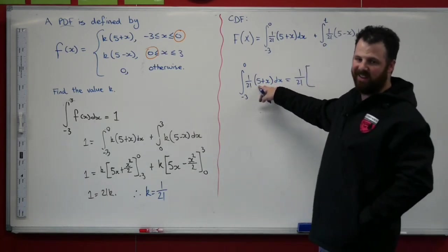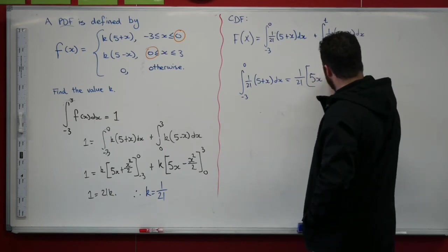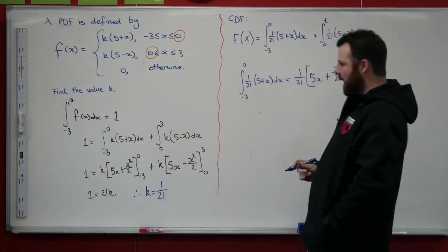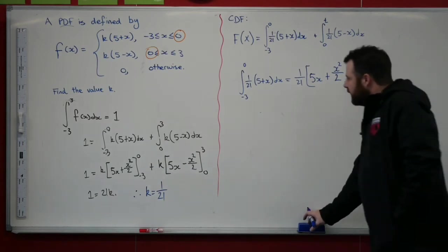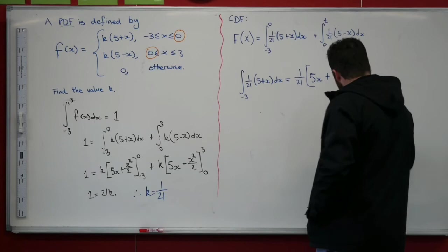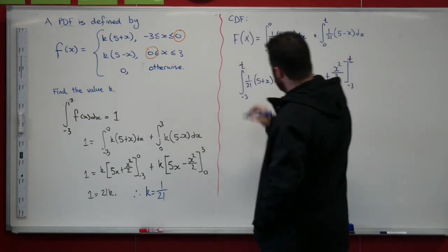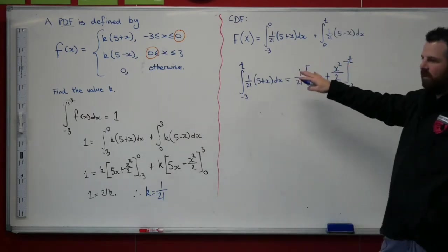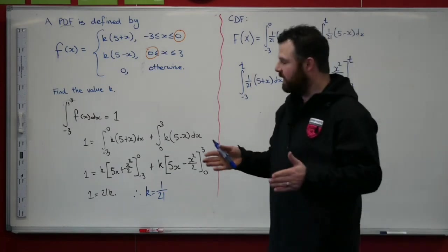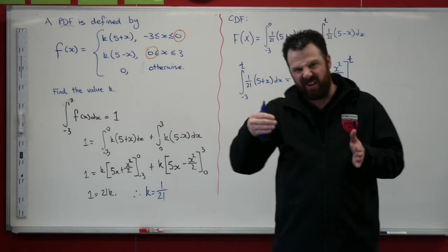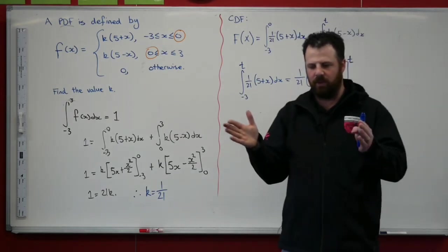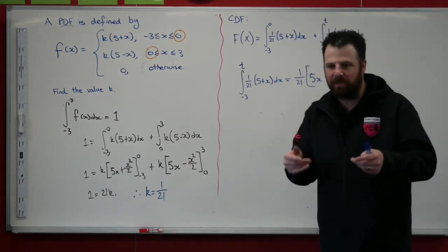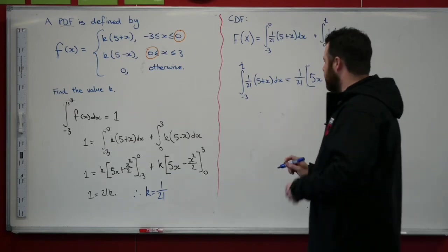So just starting off with the integral from minus 3 to 0 of 1/21(5 + x) dx. Well, that is going to be 1/21, take that out the front of, we already know what 5 + x integrates to. That is 5x + x²/2. And I want to evaluate that between minus 3 and 0. I'm going to evaluate this one with respect to t. We're evaluating this as a function because what happens if with our CDF, that value we want to define is just only in that first part of our piecewise function. So I need a statement that just tells me how to do something just in that first part.